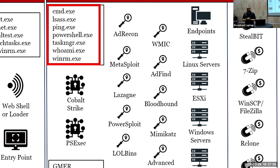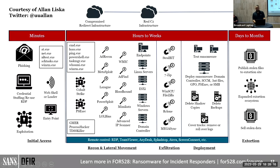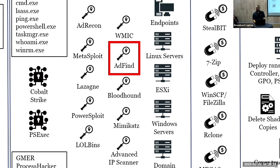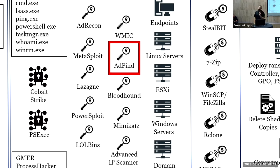A LOLBin is something included with the operating system that has secondary uses that threat actors exploit — that's what living off the land means. They're also bringing in external tools. One example I want to point out is ADFind — produced around 2003-2004, the website looks like it's from the nineties because it is. It's just an LDAP query tool that pulls data from Active Directory, and we see it used over and over by affiliates for some of the largest groups.